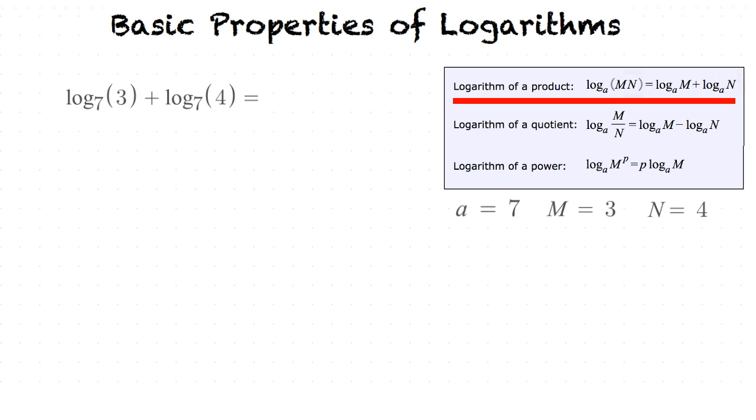So now we see that an equivalent logarithmic expression is going to have the same base a when we're applying the product rule. And in this case our a is 7. Now in order to get the equivalent expression, we need to multiply m times n. We've said that m is 3 and n is 4, so 3 times 4 is going to give us our equivalent logarithm. So this log is mathematically equivalent to log base 7 of 3 plus log base 7 of 4.